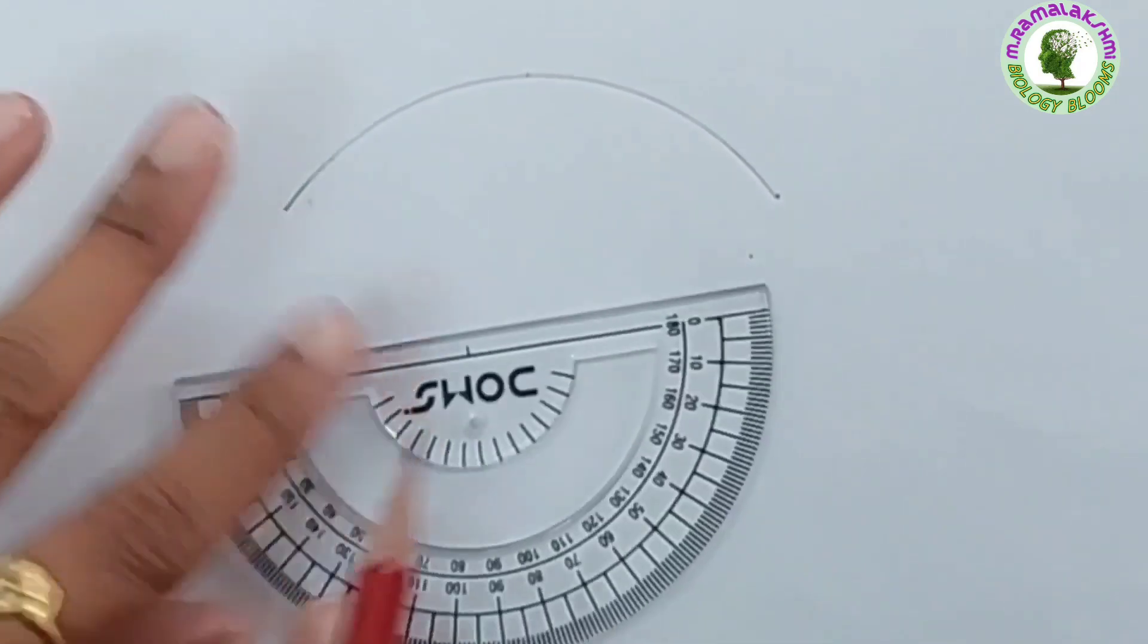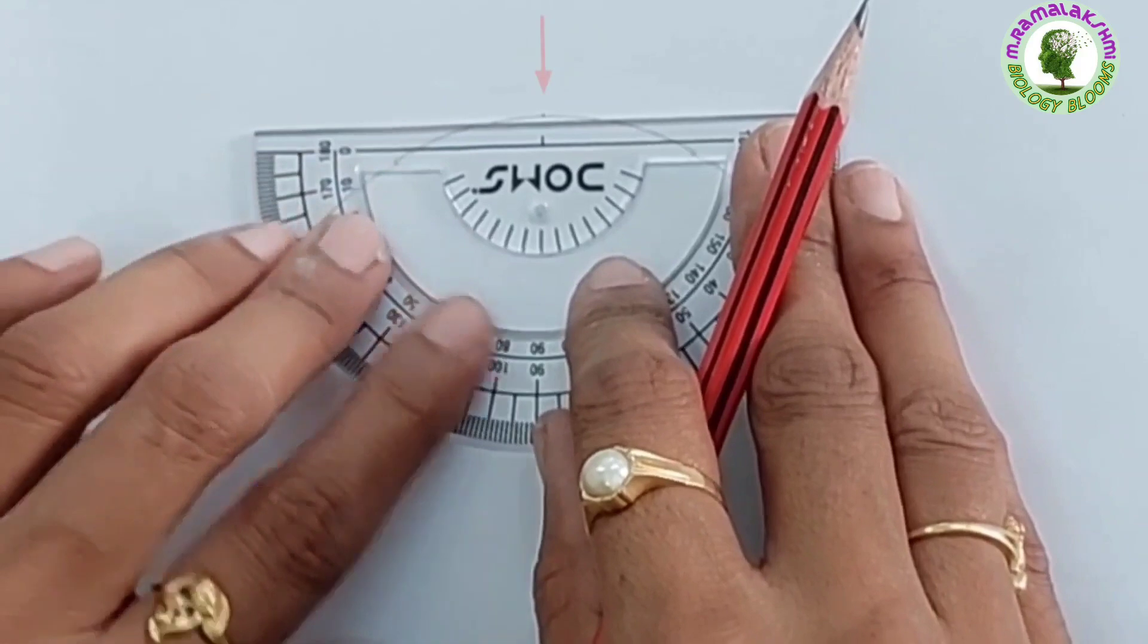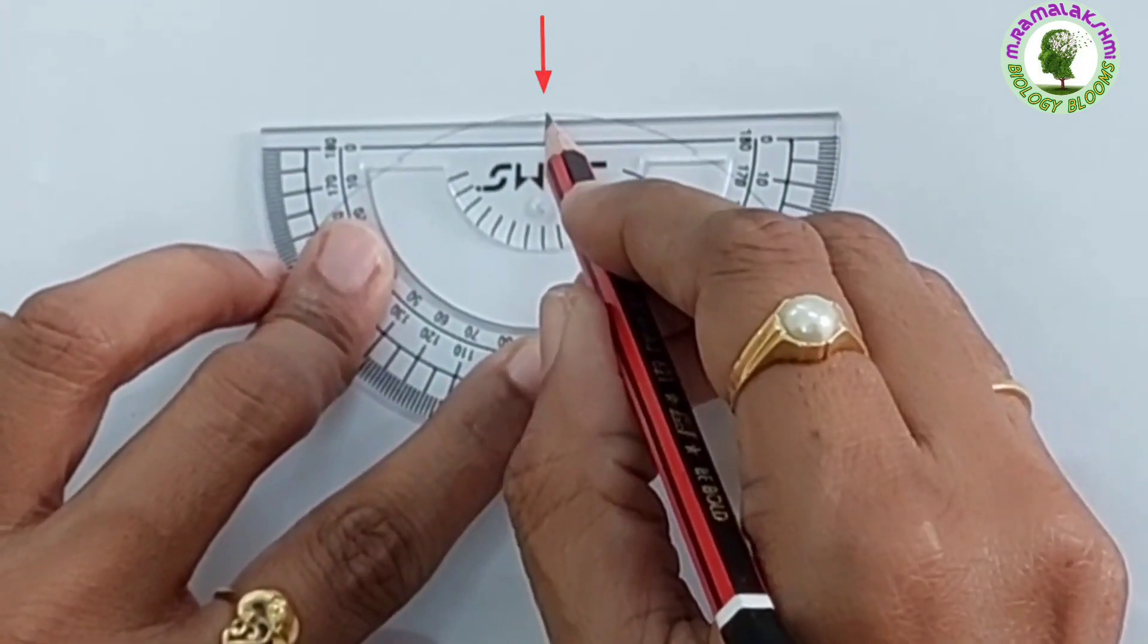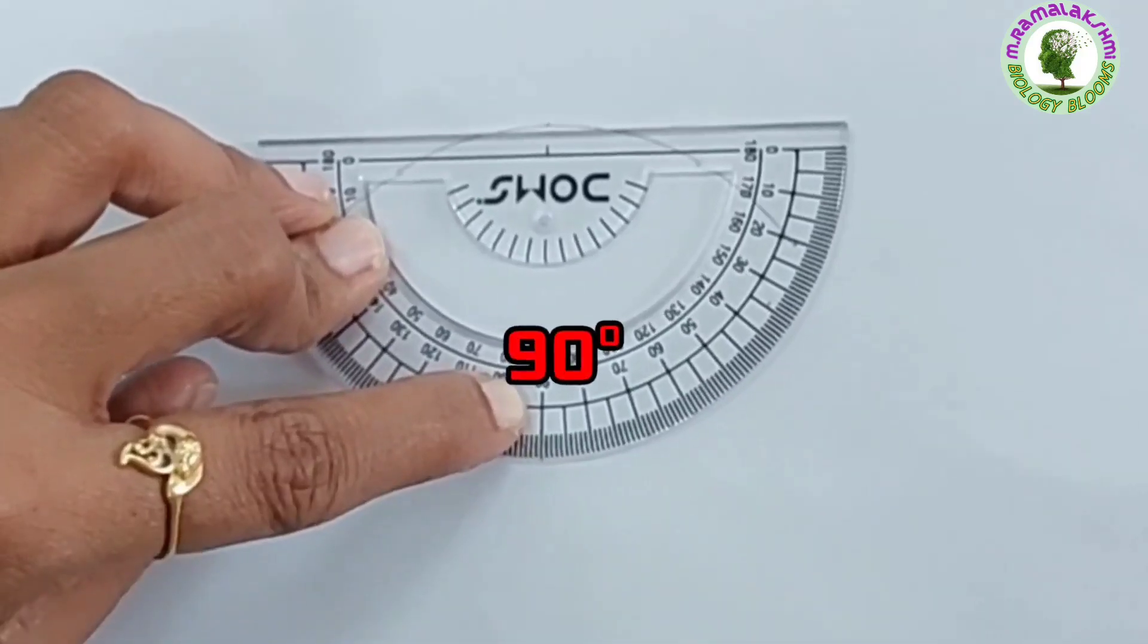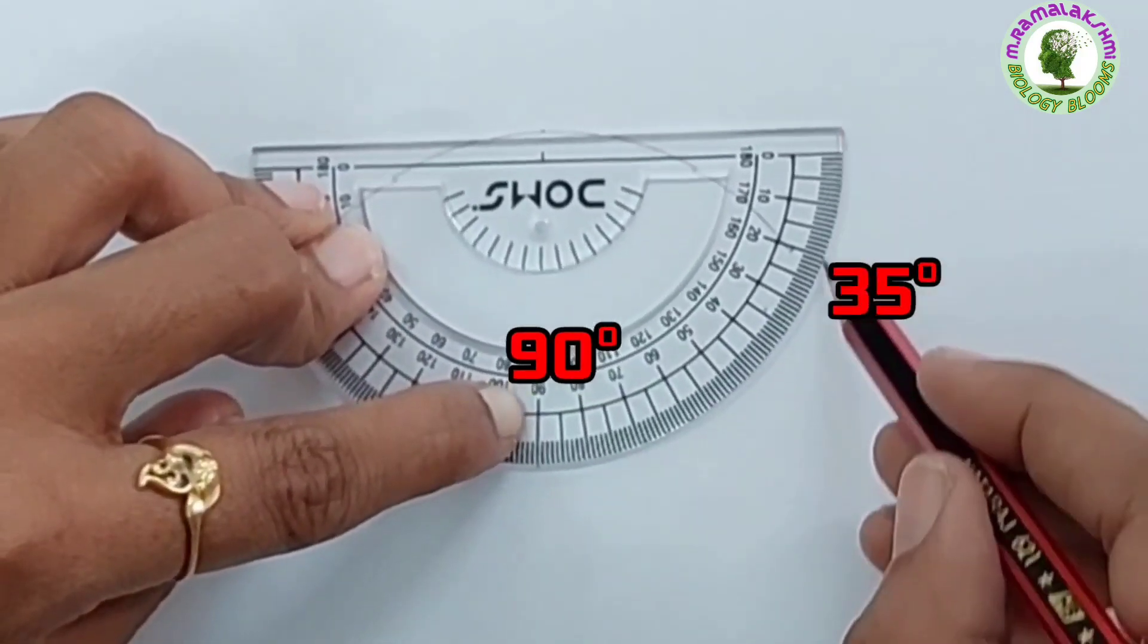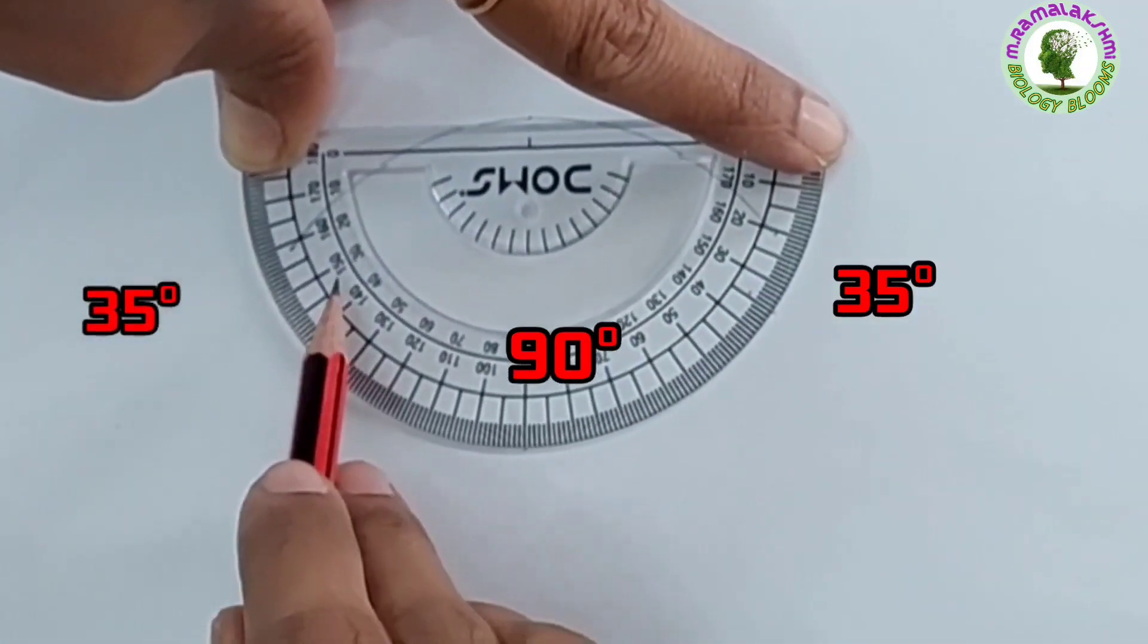Now, keep the protractor like this and keep this mark straight to the 90 degrees dot. Keep dots at 90 degrees, 35 degrees from this side and 35 degrees from this side.